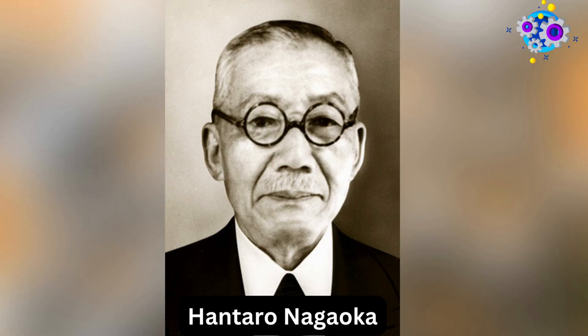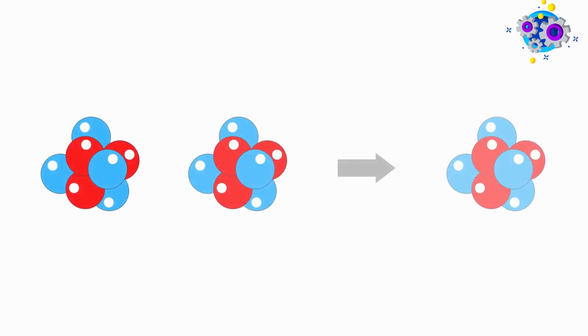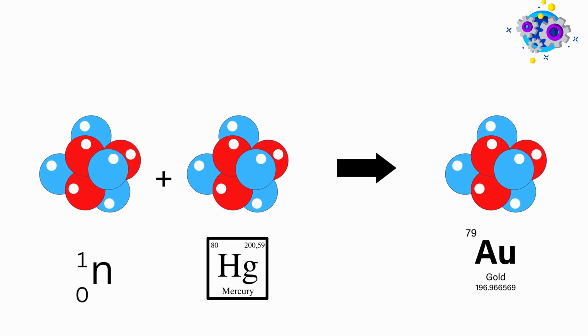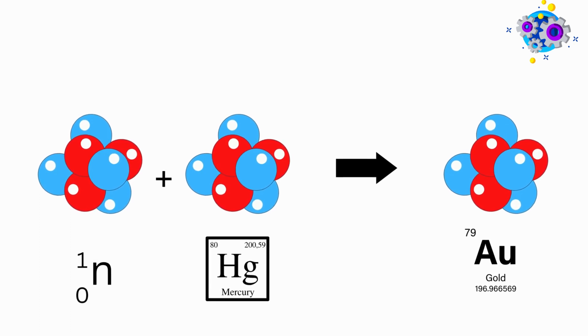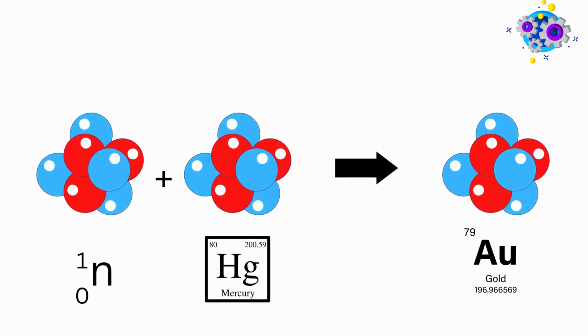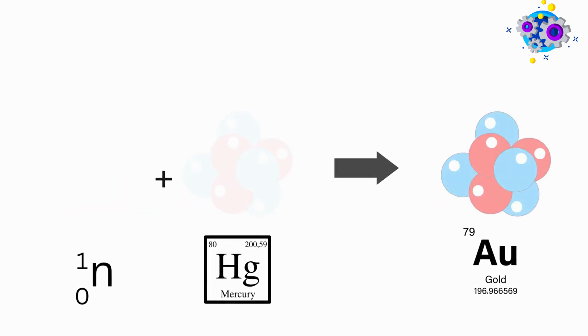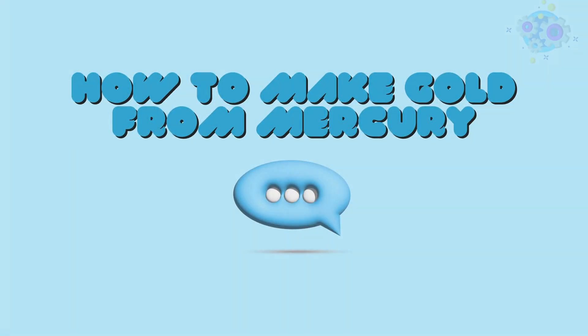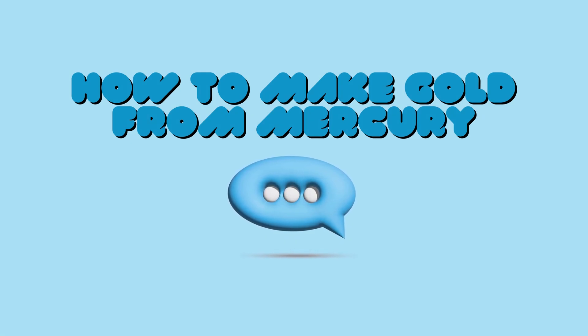Japanese physicist Hantaro Nagaoka first synthesized gold by bombarding mercury with neutrons in 1924. If you want to know how to make gold from mercury in detail, comment below.